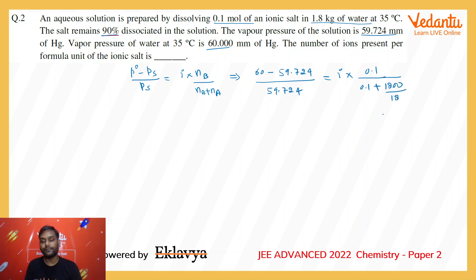On simplifying this further, 0.276 divided by 59.724 is equal to i times 0.001.